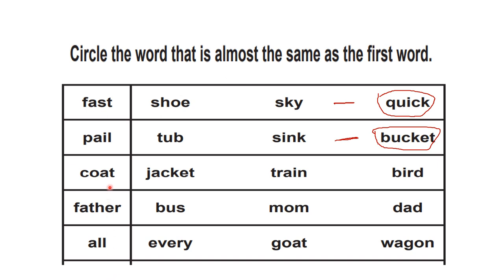Next, see here — the word is 'coat.' What is another name for a coat? Is it 'train'? No. 'Bird'? No. It's 'jacket'! A coat is also called a jacket. So we will circle 'jacket' and give a hyphen to indicate the meaning.